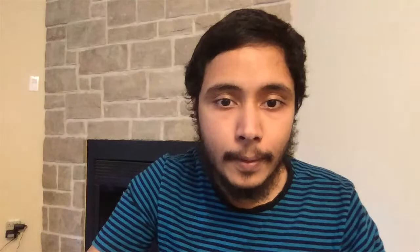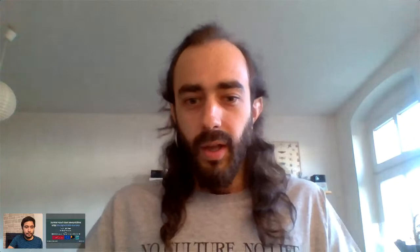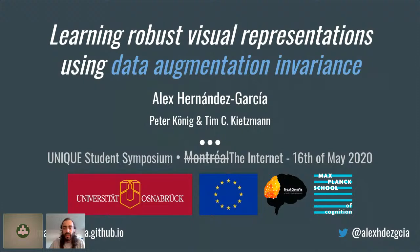Next on stage we have Alex Hernandez Garcia from the University of Osnabrück, Germany, presenting their work on learning robust visual representations using data augmentation invariants. My name is Alex, and I'm going to talk about data augmentation invariants. This is part of the work I've done in my PhD, where I had the goal of incorporating aspects of biological vision and visual perception into models of computer vision and machine learning. One thing that strikes me is that while the primary visual system is continuously exposed to changing stimuli, we expect DNNs to become comparably robust to our brains by just training on still images — and I think this is not optimal.